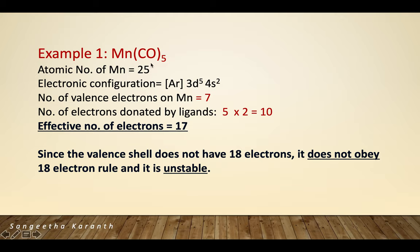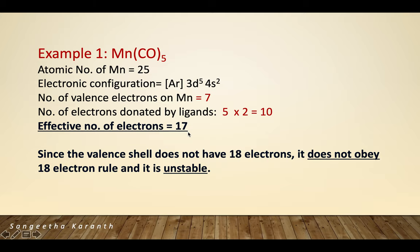Example 1: Mn(CO)5. The atomic number of manganese is 25, and the number of valence electrons is 7. Each carbonyl ligand donates 2 electrons; with 5 ligands, that gives 10. So 7 + 10 = 17, which is not equal to 18. Therefore, this complex does not obey the 18 electron rule and is not thermodynamically stable.